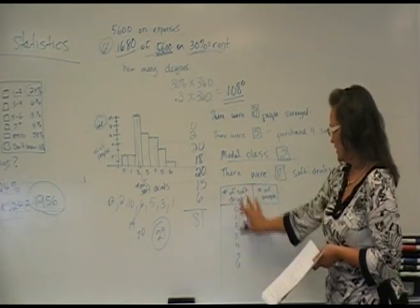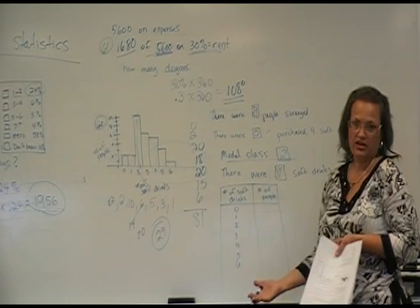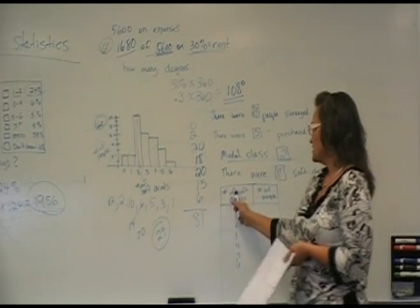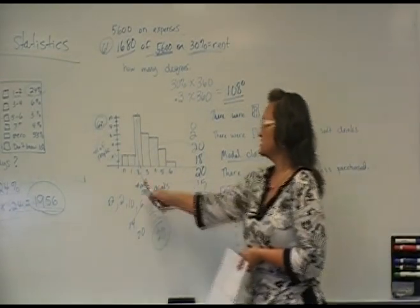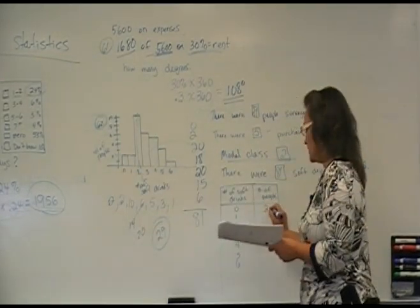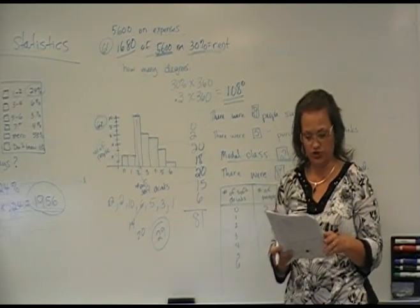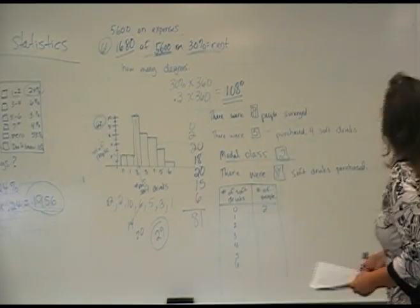And then it has us take that information into yet another chart and do a frequency distribution. The number of soft drinks and how many people. So at zero soft drinks, there were two people. And write that information once again into the frequency distribution.